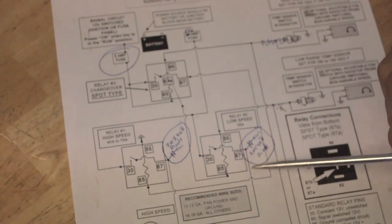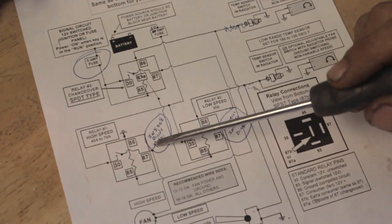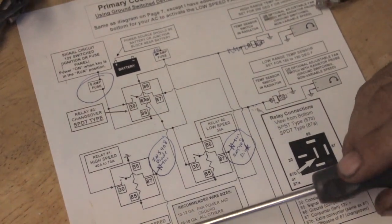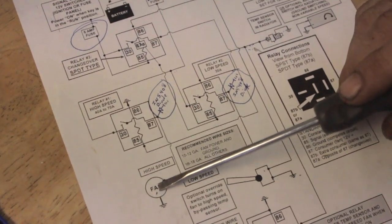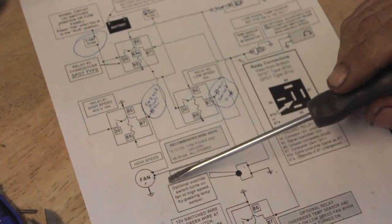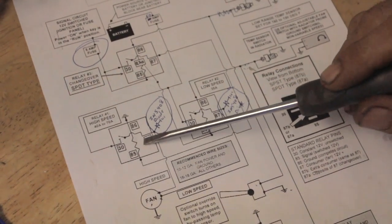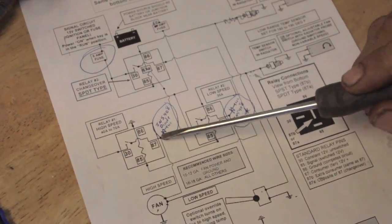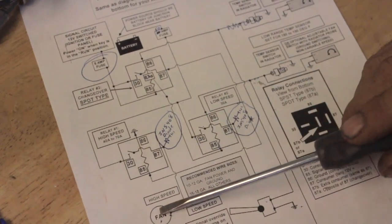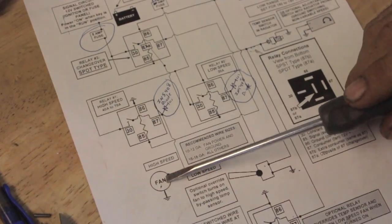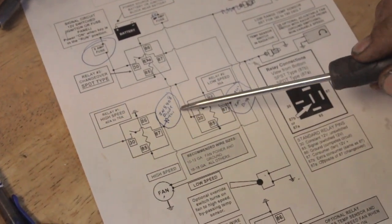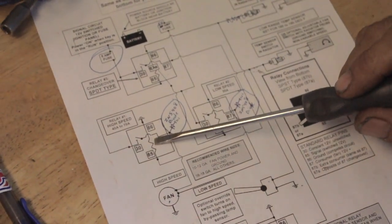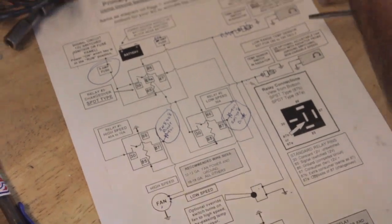Whenever these relays close, it closes this right here, which feeds it the rest of the way through, pole number 87. This one goes down and kicks on your high speed. This one, whenever it closes, goes over and kicks on your low speed. Now what I'm going to do is put a diode in right here and right here, because whenever these relays open and it kills the power to them, these fans work like a generator and they make their own energy. That'll cause a snap action inside this relay, and you'll prematurely burn your relay out.